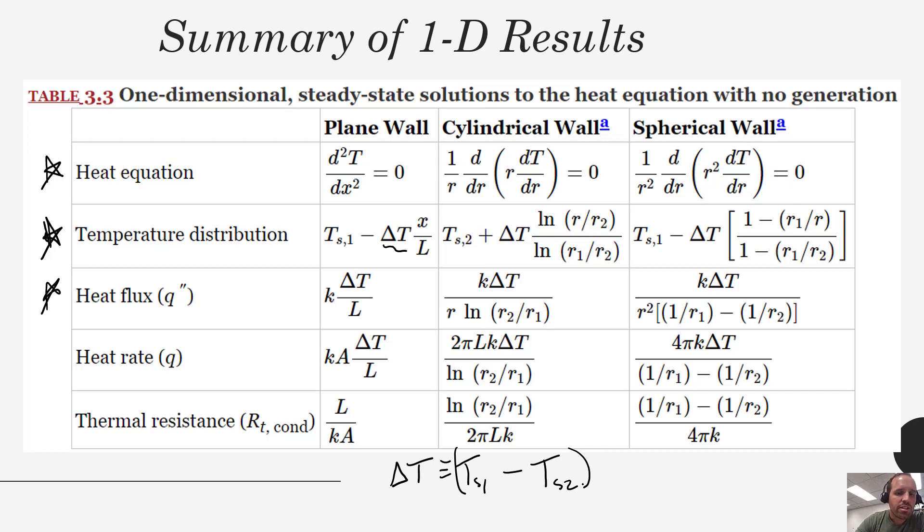Going from heat flux to our heat rate we multiply our flux by the area that is normal to the flow of heat and we end up getting our heat rate. And notice that under these circumstances the heat rate is not a function of R in these systems.